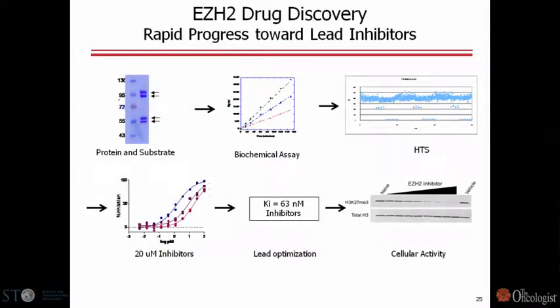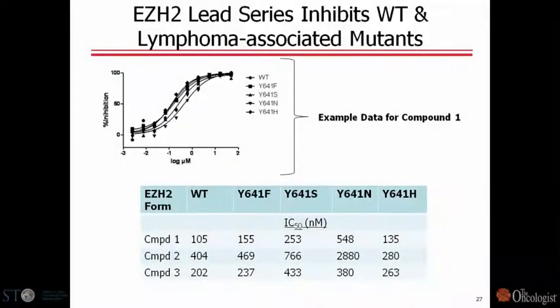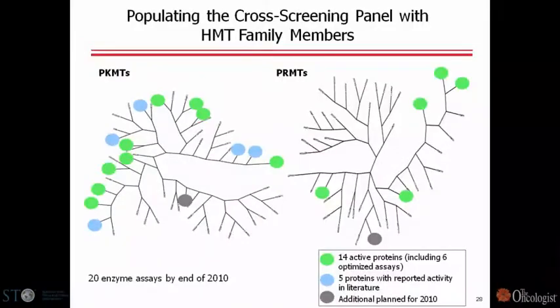In terms of EZH2 drug discovery, like DOT1L, we have potent and selective compounds. We're down to about 20 nanomolar compounds that get into cells and selectively inhibit the H3K27 mark with no effect on any of the other histone methyl marks. Our compounds hit both the wild-type and the mutant enzymes. Although we are focused on three of the 96 enzymes as drug-seeking efforts, we have defined 20 of the 96 which have good validation in terms of association with cancer.